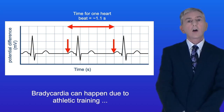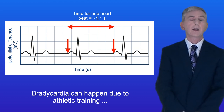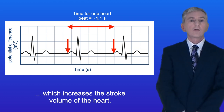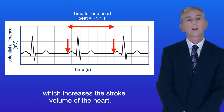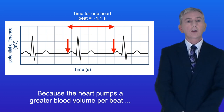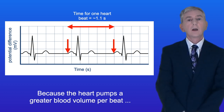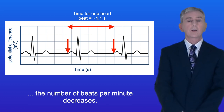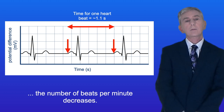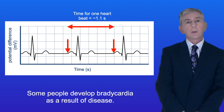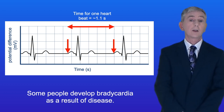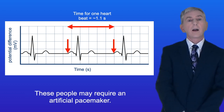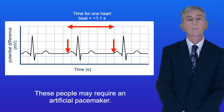Bradycardia can happen due to athletic training, which increases the stroke volume of the heart. Because the heart pumps a greater blood volume per beat, the number of beats per minute decreases. Some people develop bradycardia as a result of disease, and these people may require an artificial pacemaker.